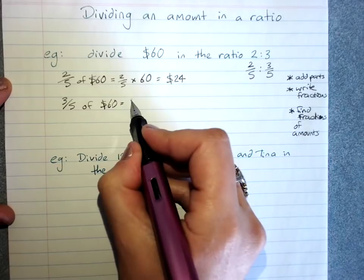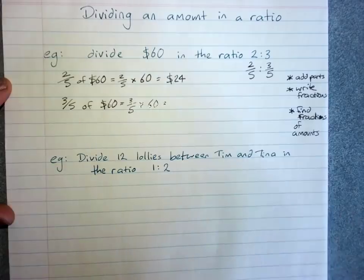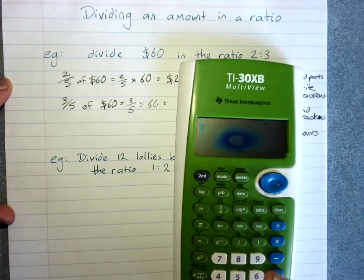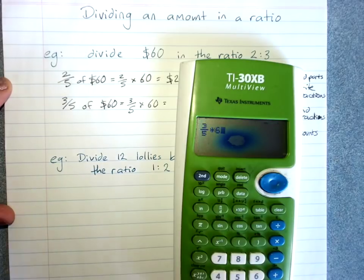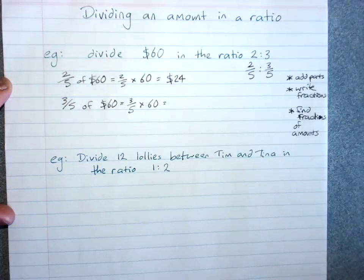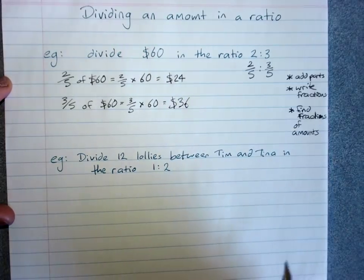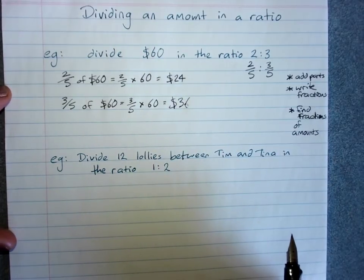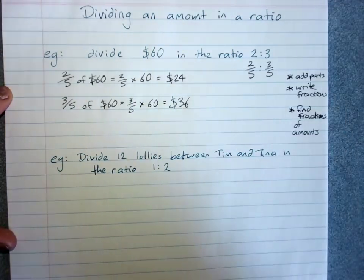Write the fraction, write the of as times, write the amount, do the calculation. Three-fifths of sixty is thirty-six. So that's the fractions method of dividing an amount into a ratio.